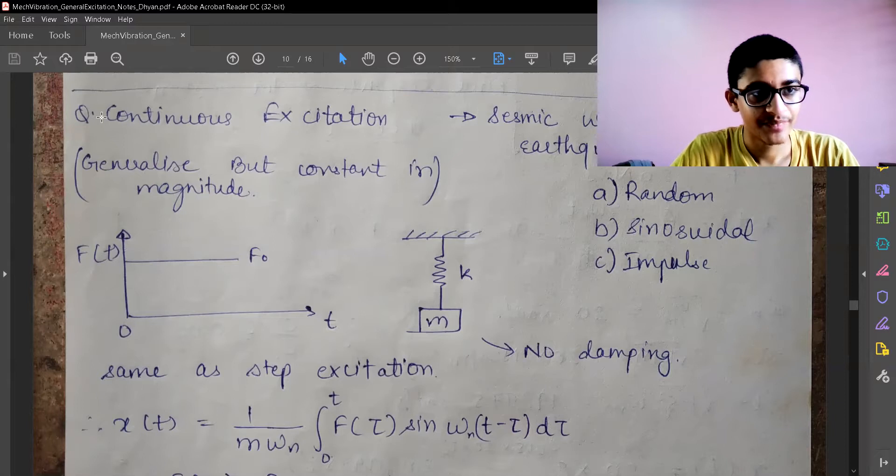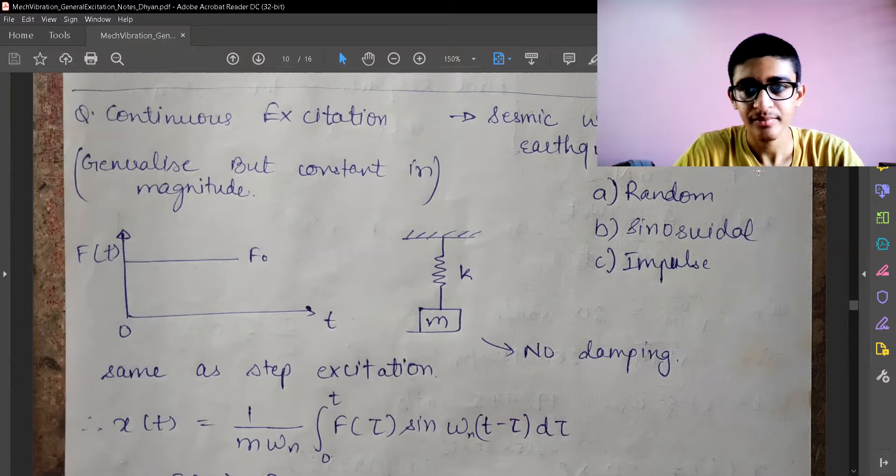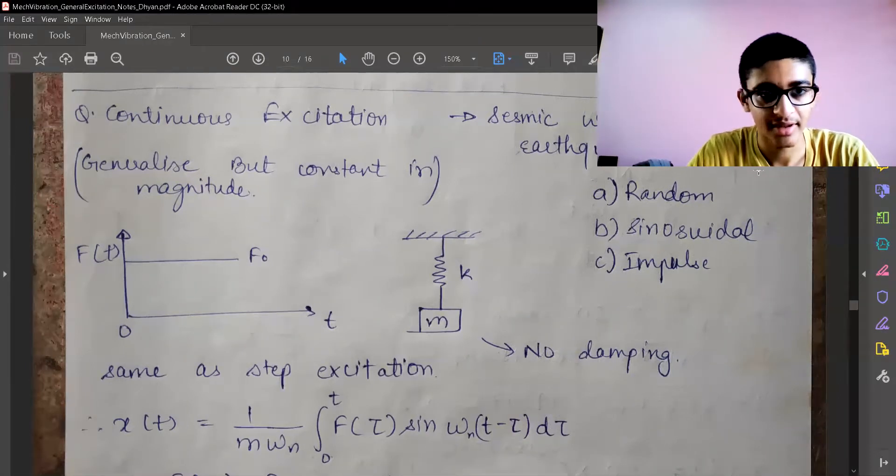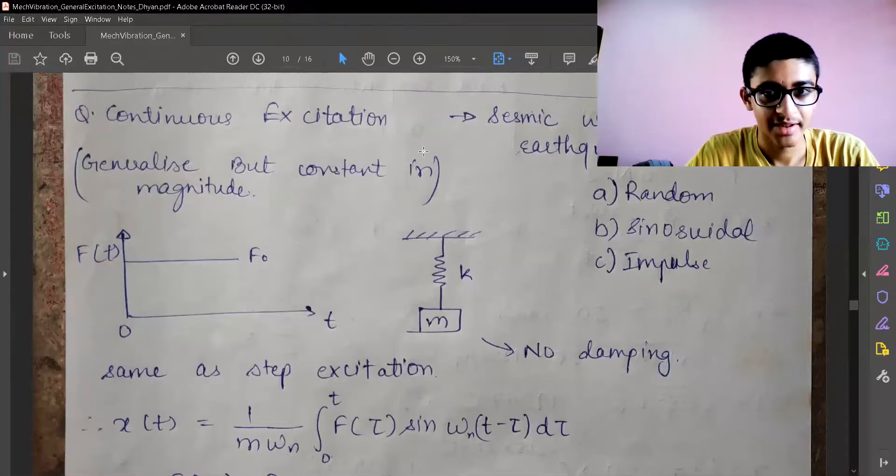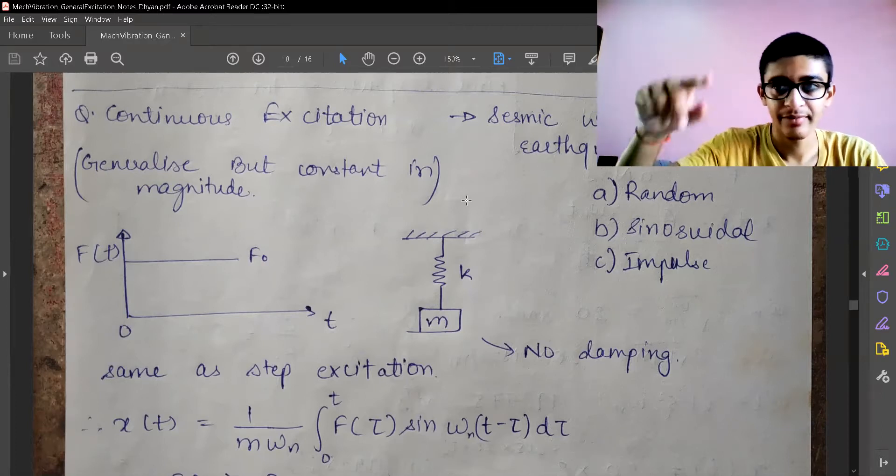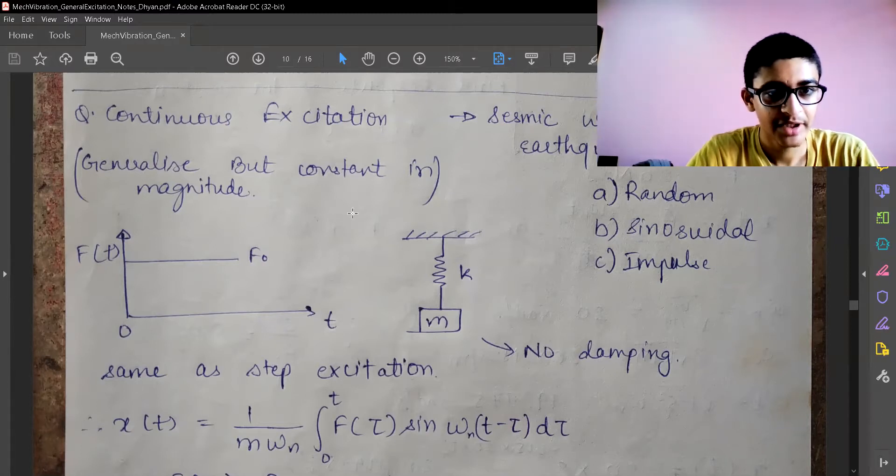Let's see another case where we have continuous excitation. The continuous excitation can have three different forms: the first form can be random, another can be sinusoidal, or third can be impulse. Continuous excitation is seen in seismic waves in earthquakes where the seismograph records the waveform or other excitations which the earth is experiencing.